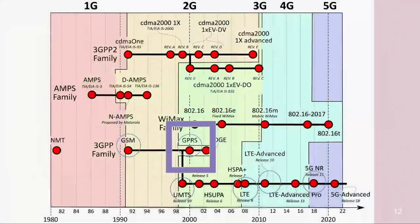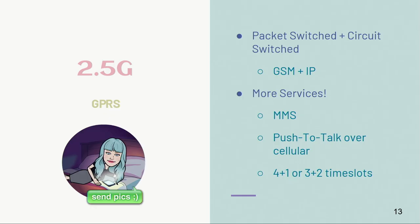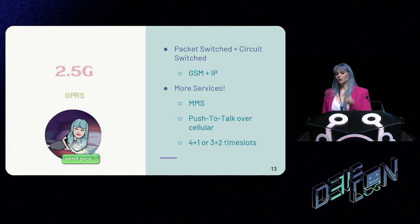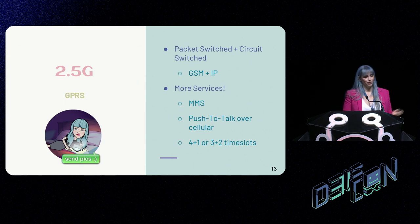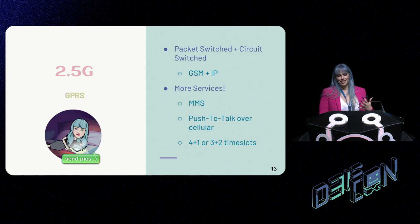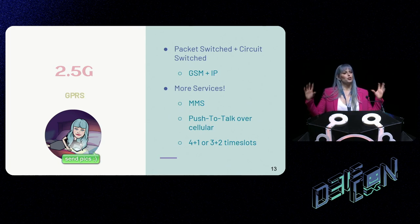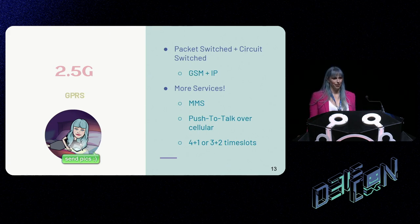Let's move on to GPRS — general packet radio service. You'll notice it doesn't neatly fit into the timeline; it's got that weird cutout because it's really like 2.5G. This is where we take our GSM circuit-switched functionality and add IP functionality. We get things like multimedia messages, push-to-talk over cellular, and we have these two network architectures essentially living in the same network.